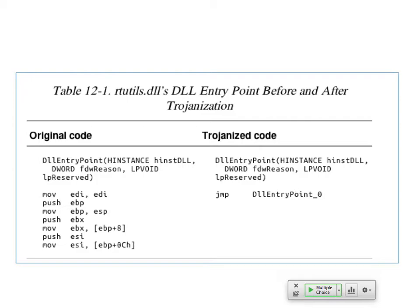Here's the original code at the DLL entry point — it moves EDI to EDI and pushes EBP and stuff like that. After this, your DLL entry point is changed to just a jump. Now it's going to jump to another location where it does malicious stuff and then does the normal stuff. The DLL will still work, just a little bit slower, but nothing will probably ever notice, and it will have the malware running.